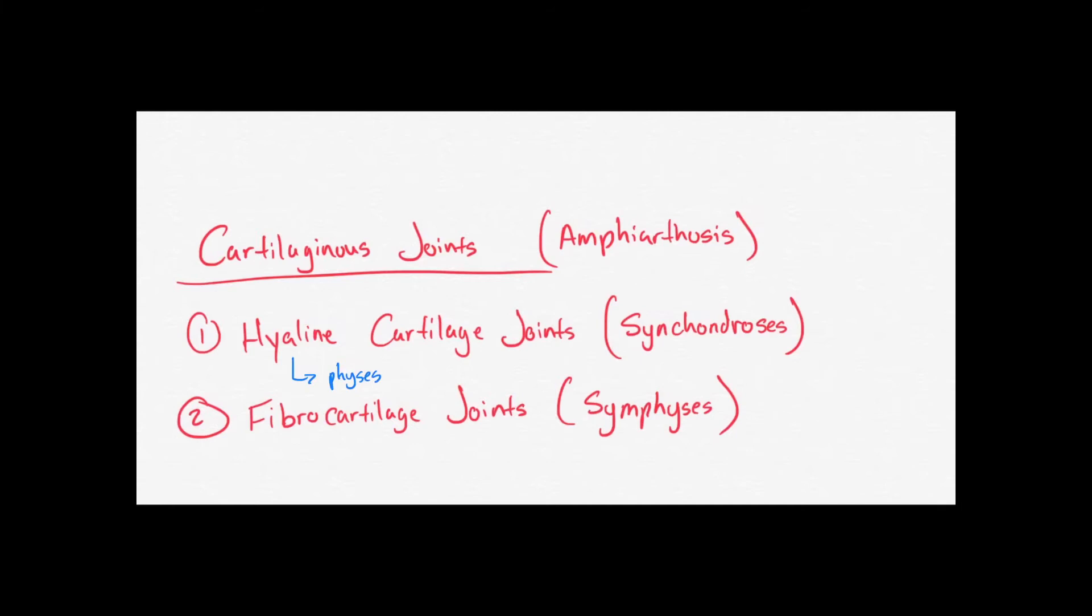Another example of a hyaline cartilage joint is the xiphysternal synchondrosis, as the name suggests. You may not know where the xiphysternal synchondrosis is right now, but in a later video I will identify it for you.